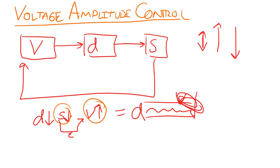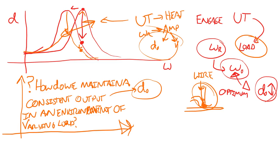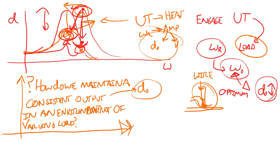The resonant frequency can change based on load, drive amplitude, or achieved displacement. Even if we compensate with voltage, if the resonance frequency shifts, our set point on the displacement curve drops too. We are not achieving our maximum potential displacement. For that, we also have to adjust frequency, and the signal we use to adjust frequency is phase.